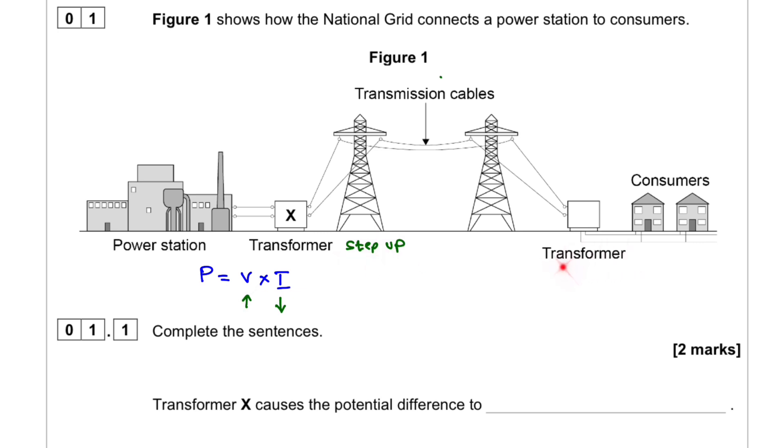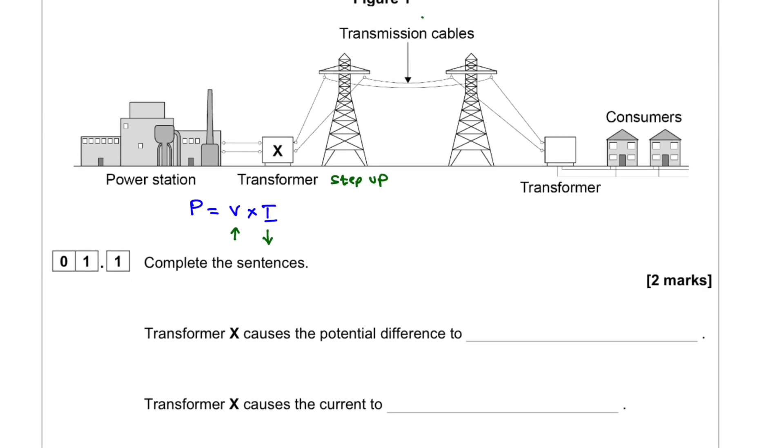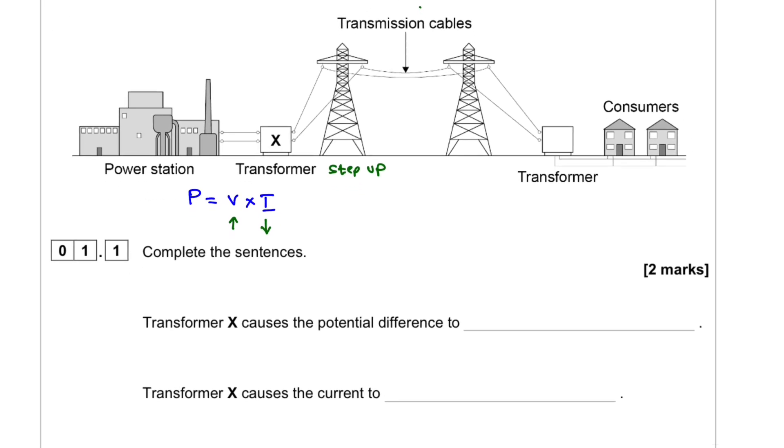This is called step-down transformer because we're decreasing the voltage. And now we can complete the sentence here. The sentence here states that transformer X causes the potential difference to... So here potential difference will increase. So we would write increase.